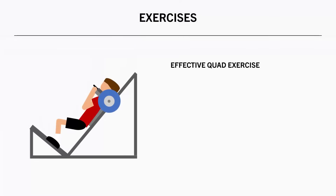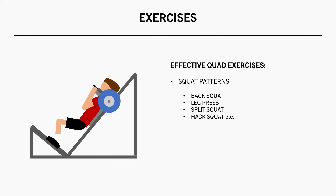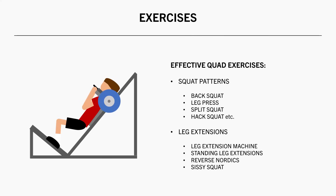Let's now discuss what exercises are effective to train the quads. There are two main categories. First are squats or any other squat pattern — including the classic barbell squat, leg presses, lunges, split squats, hack squats, belt squats, and pendulum squats. They all involve simultaneous knee and hip extension. The other category is leg extensions. The main one is the classic leg extension machine, but this category can also include standing leg extensions, reverse nordics, and strict sissy squats.